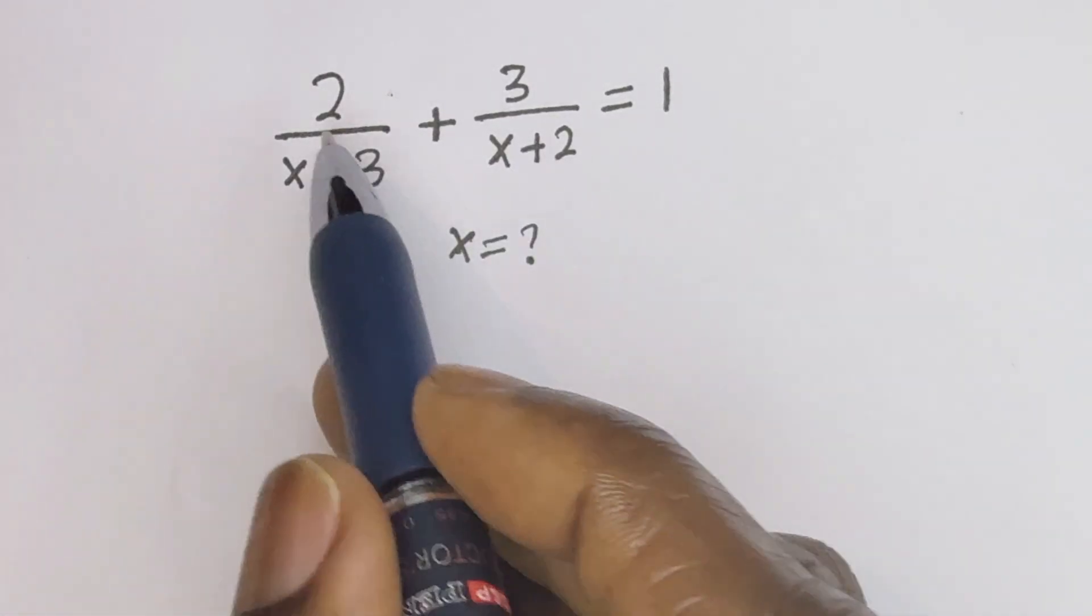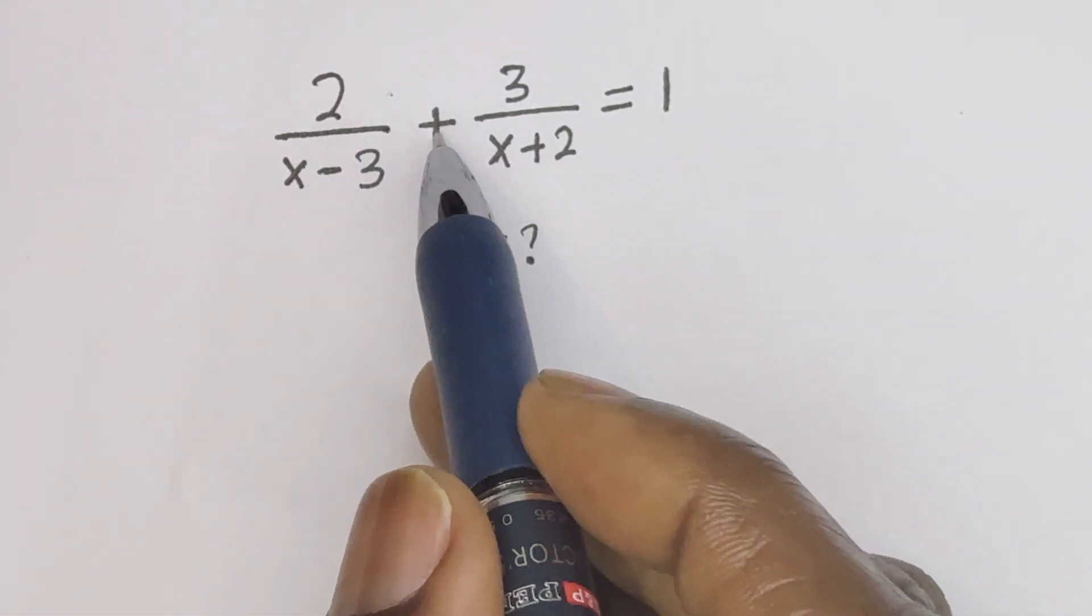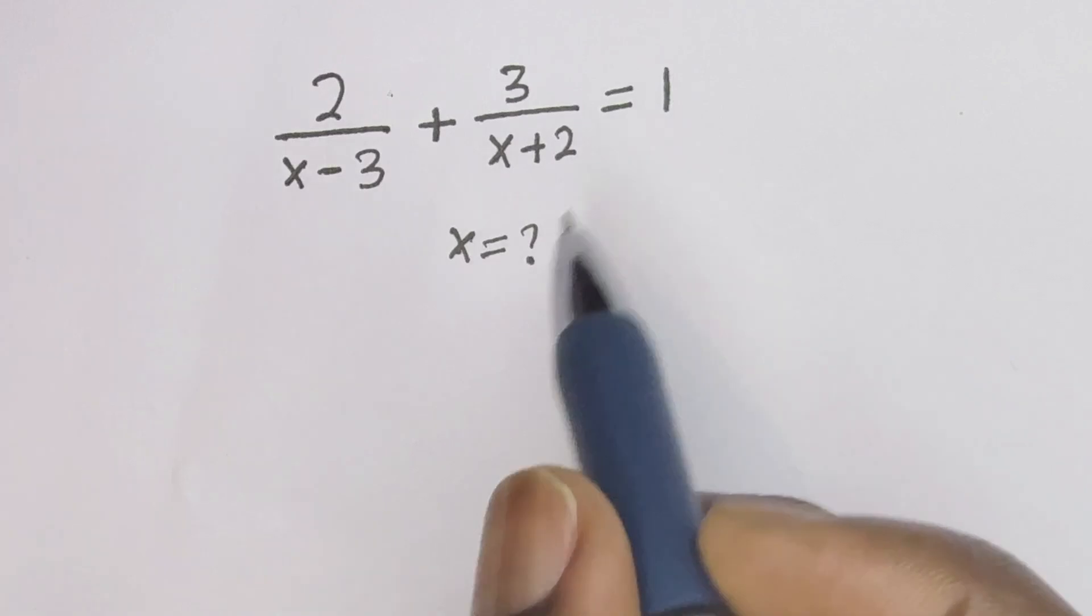Hello, how to solve for x in this equation: 2 divided by x minus 3 plus 3 divided by x plus 2 is equal to 1.